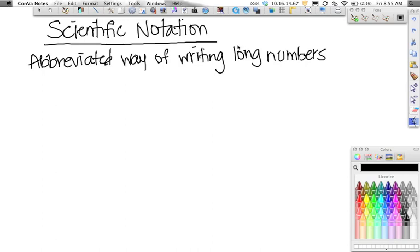Scientific notation - why do you want to do it? Well, first of all, the reason why we use scientific notation is it's an abbreviated way of writing a really long number. Now, this number doesn't necessarily mean that it's a big number. It just means that it has a lot of digits in the number itself.